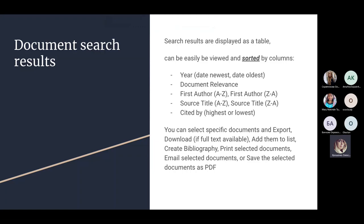When you have searched for specific documents, results are displayed as a table that can be sorted by columns: by date newest or oldest, by document relevance, by first author A to Z or Z to A, and by citations highest or lowest. You can select specific documents and export them, download them if full texts are available, add them to lists, create bibliographies, create reference lists, print selected documents, email them, or save them as a PDF.